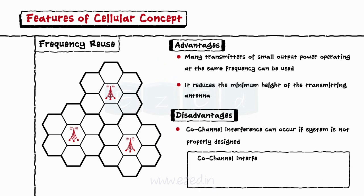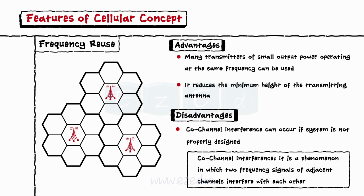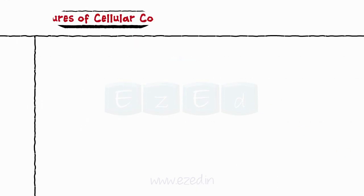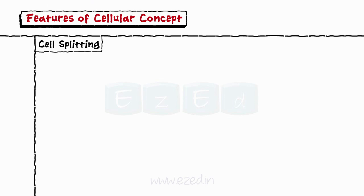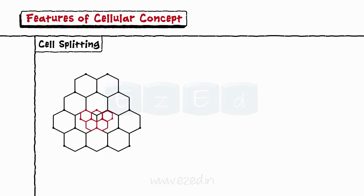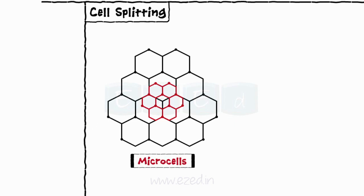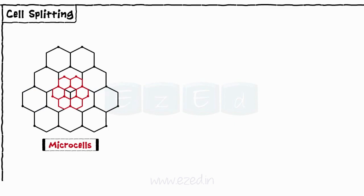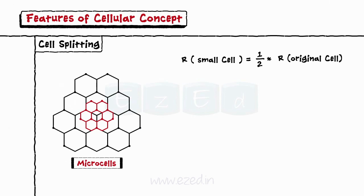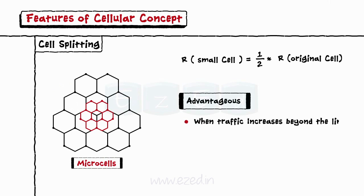Co-channel interference is a phenomenon in which two frequency signals of adjacent channels interfere with each other. The second feature of the cellular concept is cell splitting. In the cell splitting technique, each cell is divided into smaller cells known as microcells. The radius of these small cells is half of the original radius. Cell splitting proves advantageous when the traffic of cell phone users increases beyond the limit of a regular cell.